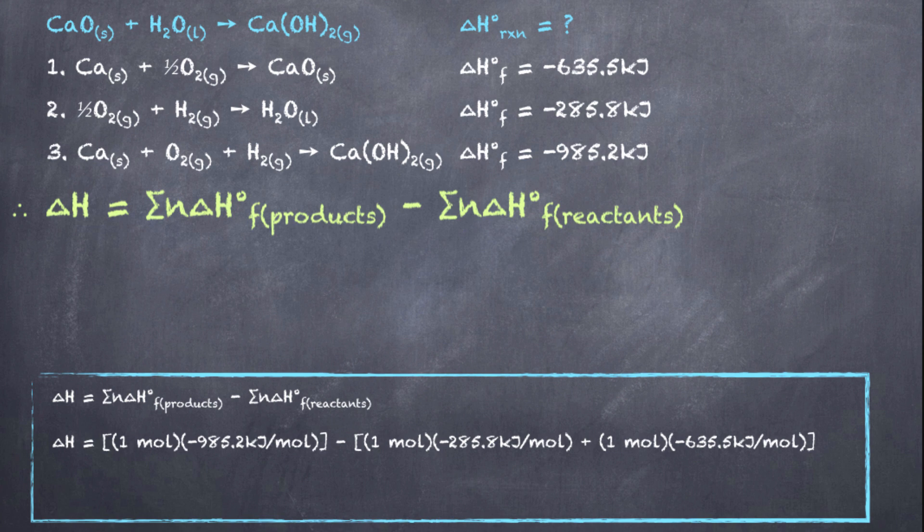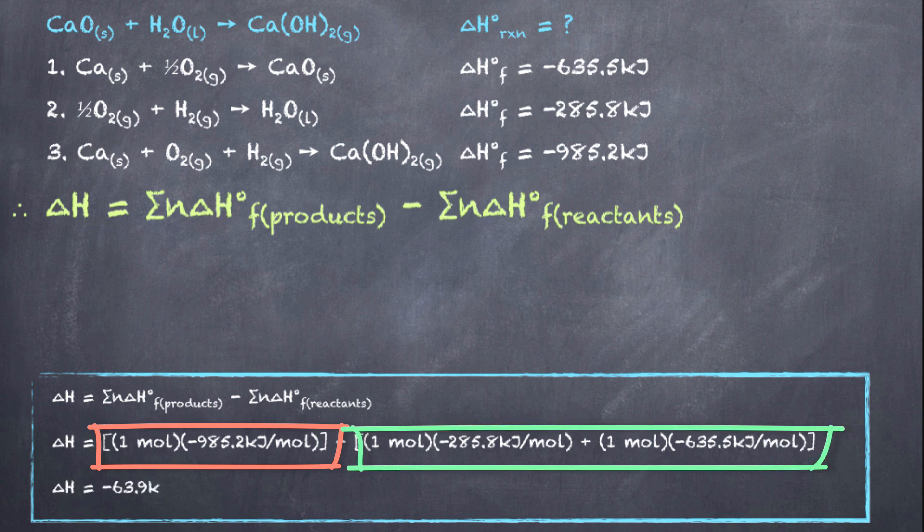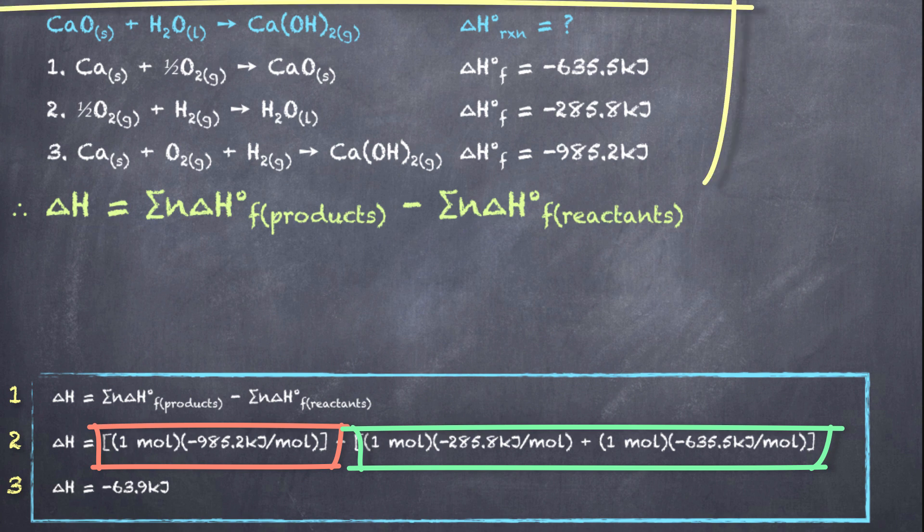Then we can sum up the products, and in this case there is only one product, so we don't have to sum up too many products. And then we're going to take the sum of the reactants as well. And plugging it into this equation, we can arrive at the exact same result as if we used Hess's law, but you can see that it only takes three lines as opposed to a whole bunch of reaction manipulations to figure out the same enthalpy change for that identical reaction.